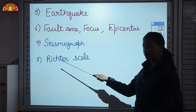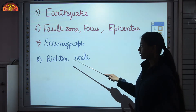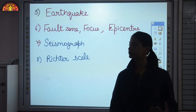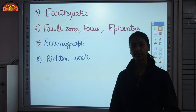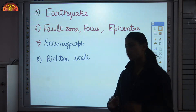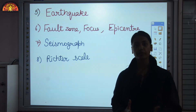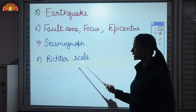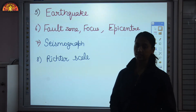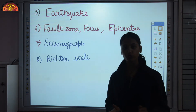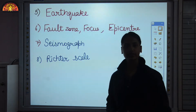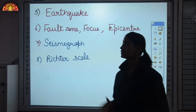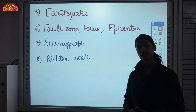Then we discussed the Richter scale. Sometimes earthquakes are very mild and not disastrous, and sometimes they are very disastrous. The scale on which we measure the energy and power of an earthquake is known as the Richter scale, and its range is from 0 to 10. If an earthquake is between 0 and 4 it is considered very weak. If it is above 7 it is considered very strong and causes disaster.